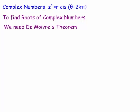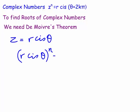De Moivre's theorem states that if I have a complex number z written in polar form as r cis θ, and I raise it to the power n, I get r^n cis(nθ). The n brings down onto the argument — this is a really amazing theorem.